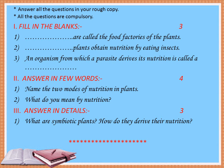The first question is fill in the blanks, consisting of 3 marks. Question number 1: dash are called the food factories of plants. Question number 2: dash plants obtain nutrition by eating insects. Question number 3: an organism from which a parasite derives its nutrition is called a dash.